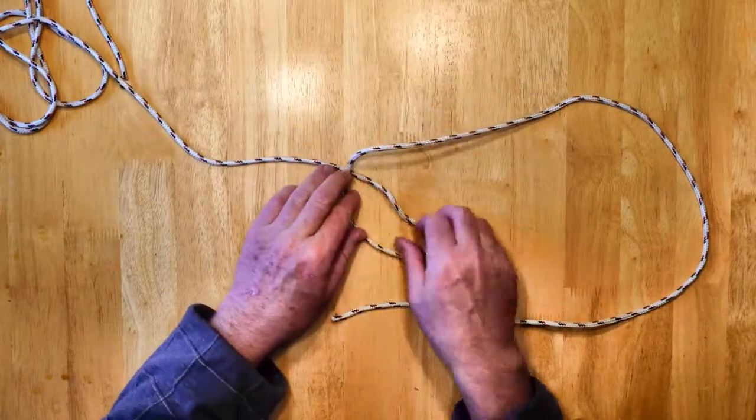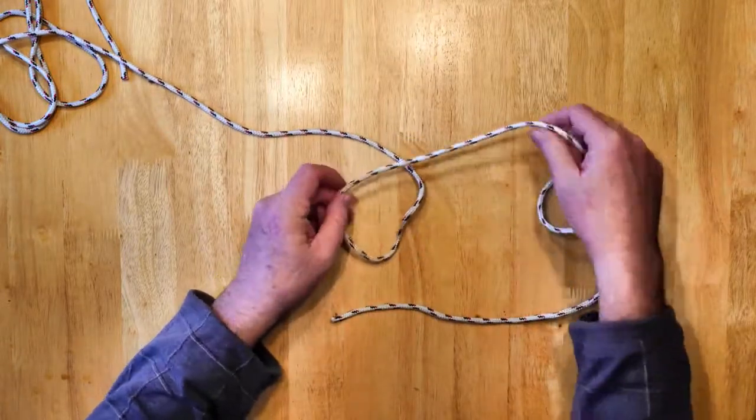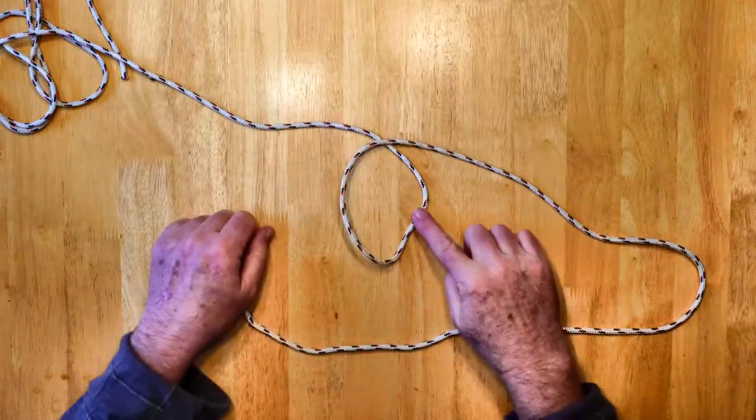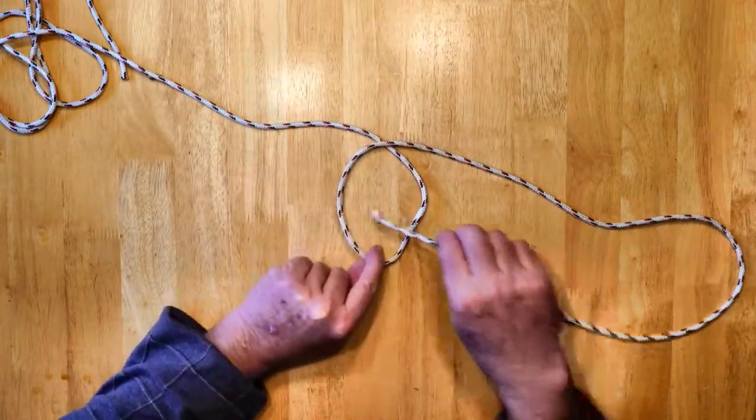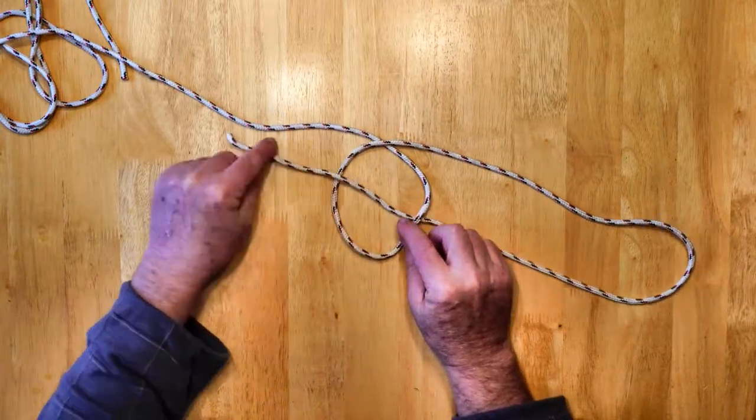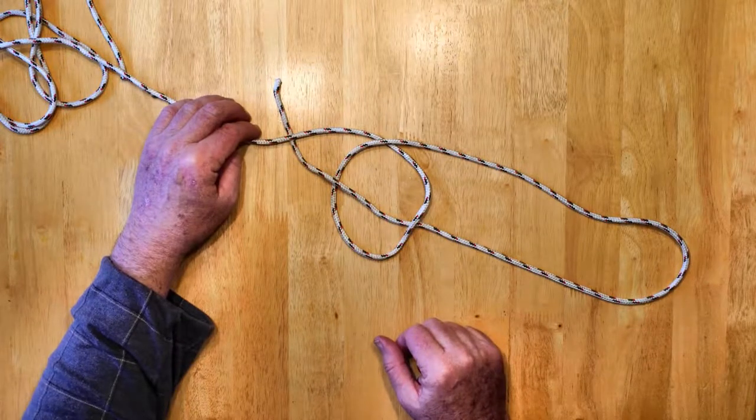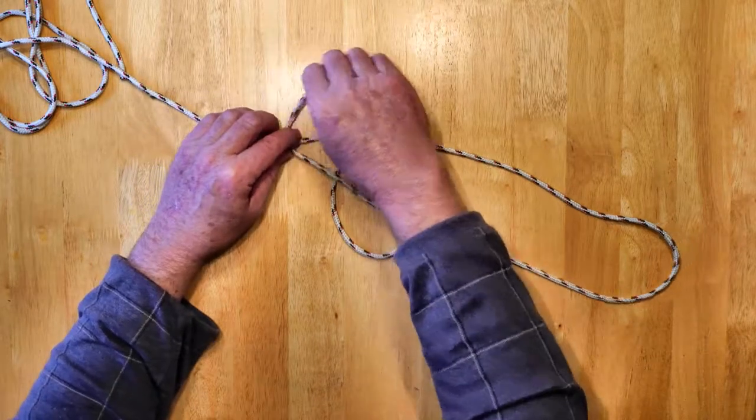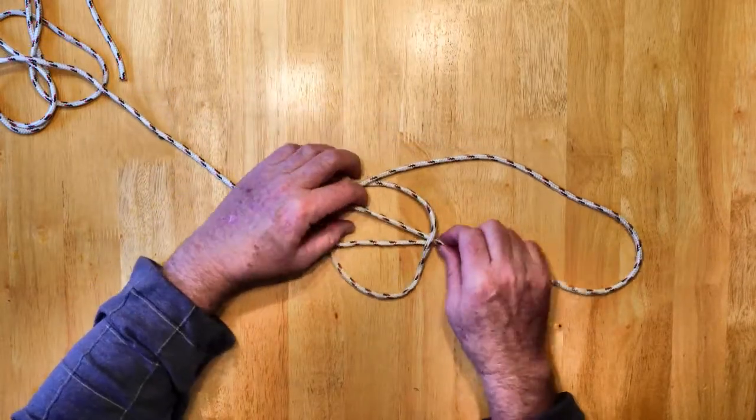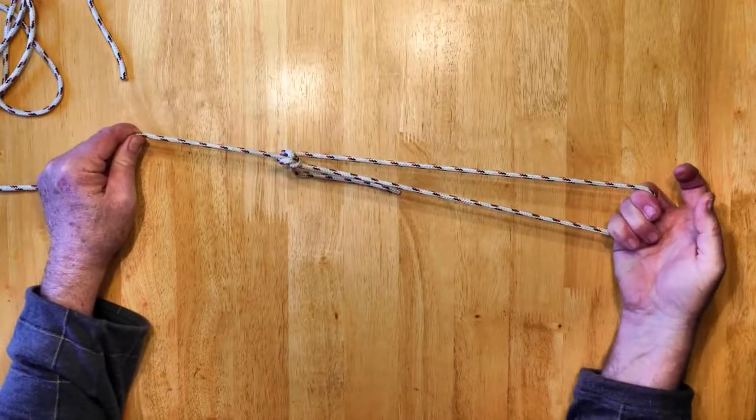Now I did that with this on top of this. It still works. Like I say, I'm having a hard time with this cord. It just doesn't want to lay flat. Now this is under this. So instead of coming this way, I want to come underneath. So I want to go under, over, and now under my working, my standing end. And now I want to follow my working end back through that loop. And again, give it a tug. And there is my loop.